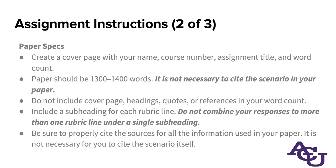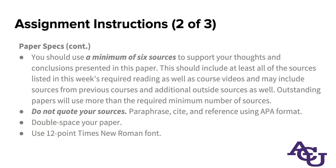There's a reminder to cite all the sources for the information you use, but you don't need to cite the scenario itself — the scenario is a given. You are required to have at least six sources to support your statements and arguments in this paper. It should specifically include all the required reading and any other resources — you can draw on things you've found in previous courses or seek out new ones. Papers that receive full credit will use more than the required minimum number. There's also a note here not to use any direct quotations — so paraphrase, cite, and reference as normal. The rest is just standard APA course paper formatting: double-spaced, Times New Roman, 12-point font.